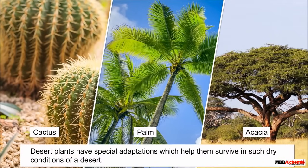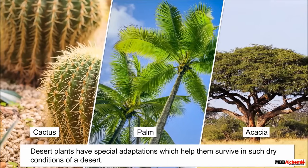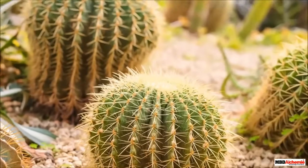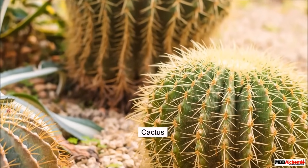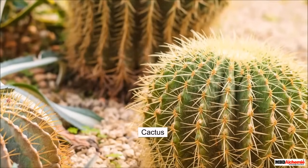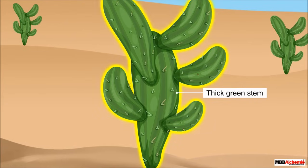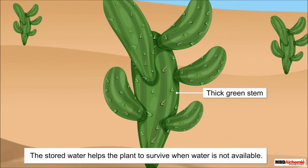These desert plants have special adaptations which help them to survive in such dry conditions of a desert. Let's discuss these adaptations by considering the example of a cactus plant. A cactus plant has a thick green stem. The thick stem stores water in it when water is available. This stored water helps the plant to survive when water is not available.